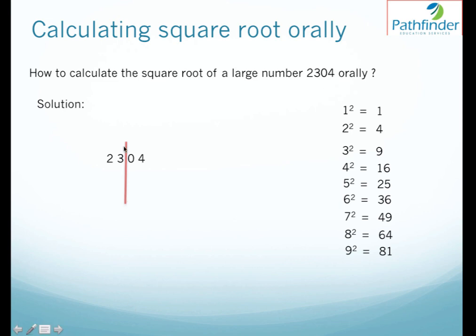Now when you placed this line, it divides the number into two parts. The first two digits are 23 and the last two digits are 04. So if 04 has to be the unit digit of the square, the unit digit of the square root can either be 2 because 2 square gives us 4 or it can be 8 because 8 square gives us 64.